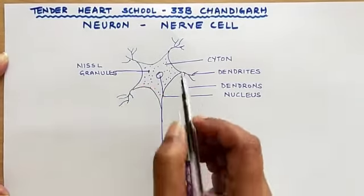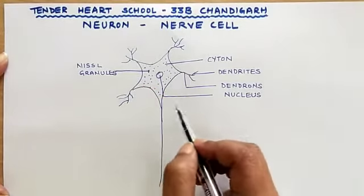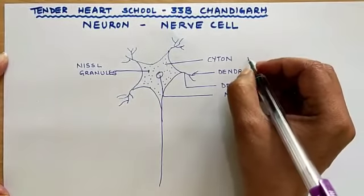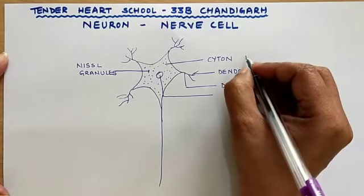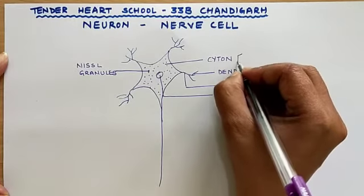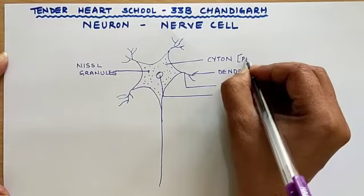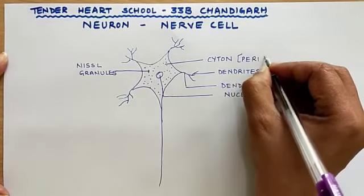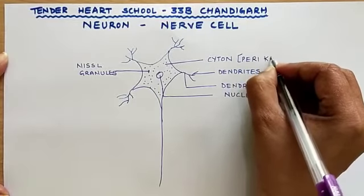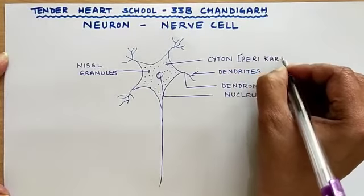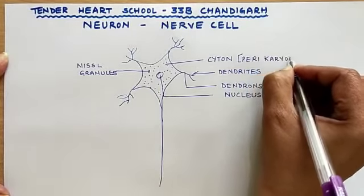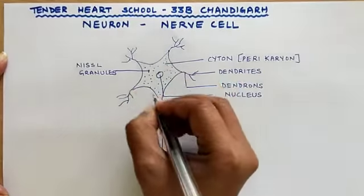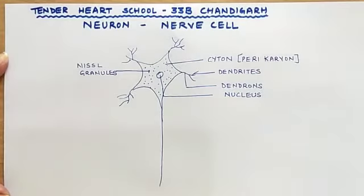So this is our cytone. Cytone is also called the perikaryon — the main cell body of the nerve cell.